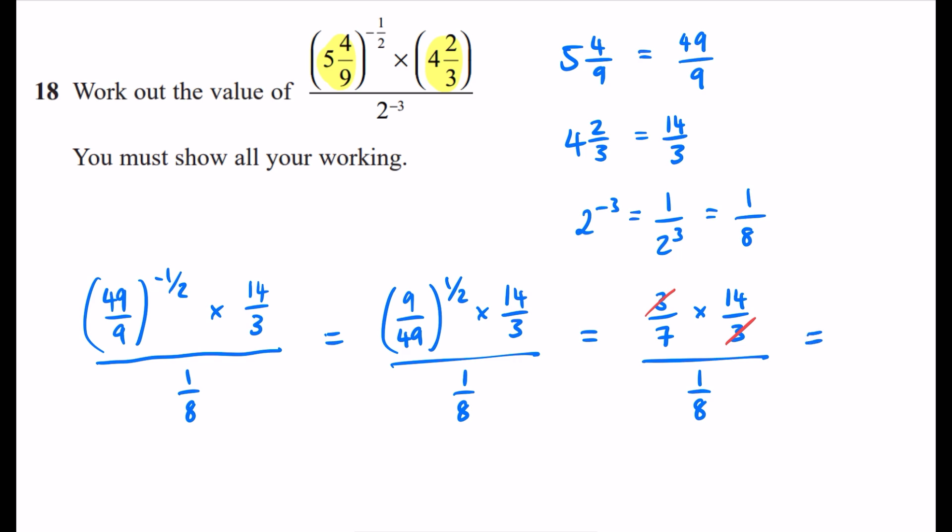So that all we're left with in the numerator is a 14 divided by 7. 14 divided by 7 is 2. And we have 2 divided by an 8.